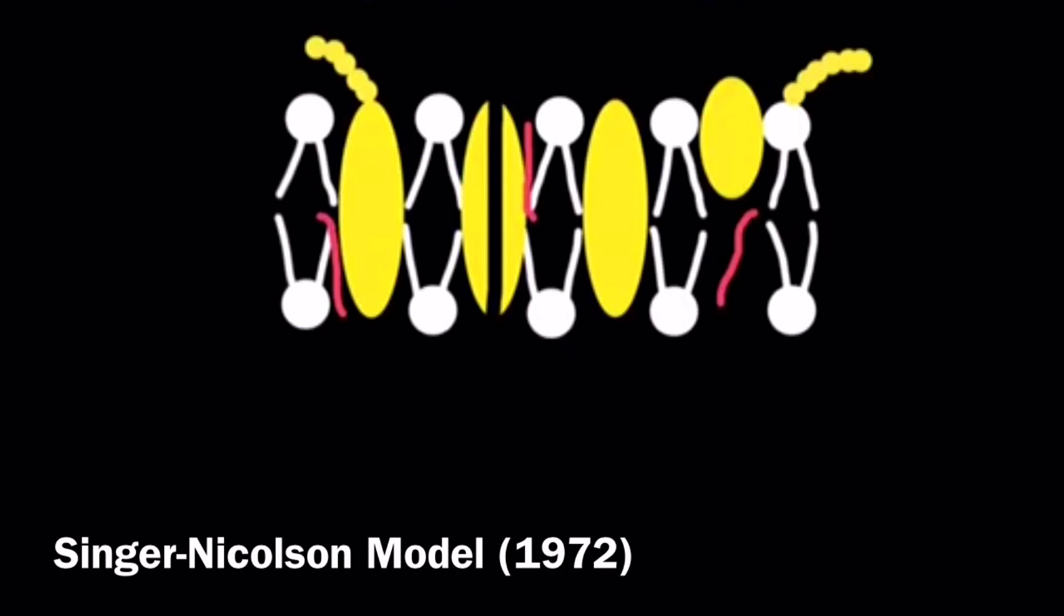These inconsistencies led to Singer and Nicolson proposing in 1972 the currently accepted fluid mosaic model of the cell membrane. In this model, we notice that membrane regions differ in the protein configuration and concentration of proteins.